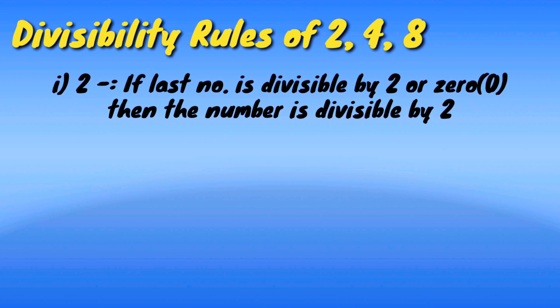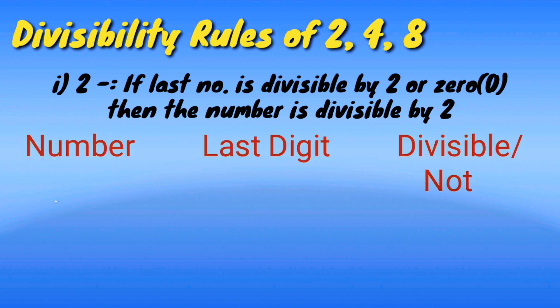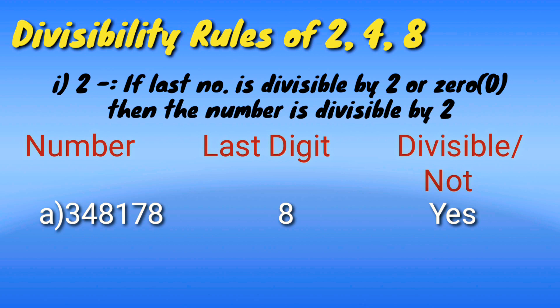Number 1: Rules of 2. If the last digit is divisible by 2 or is 0, then the number is divisible by 2. For example, 3,48,178. In this number the last digit is 8. 8 is divisible by 2, so the whole number is divisible by 2.